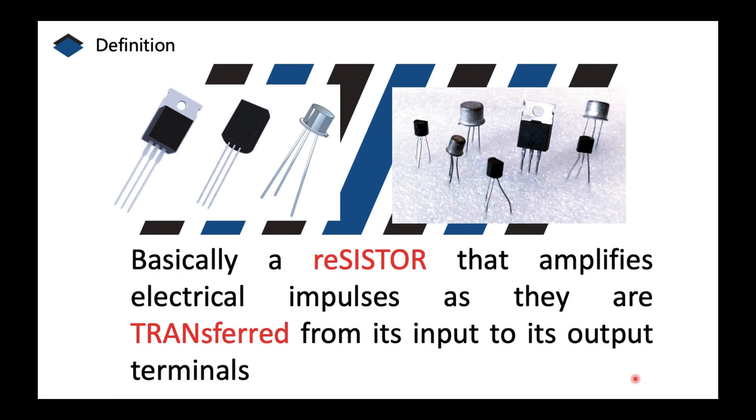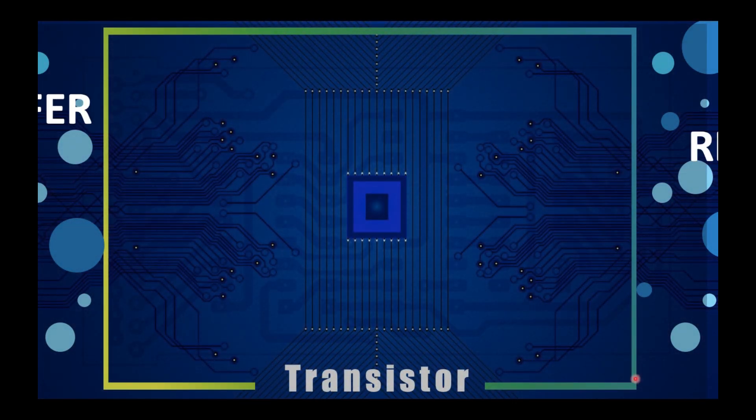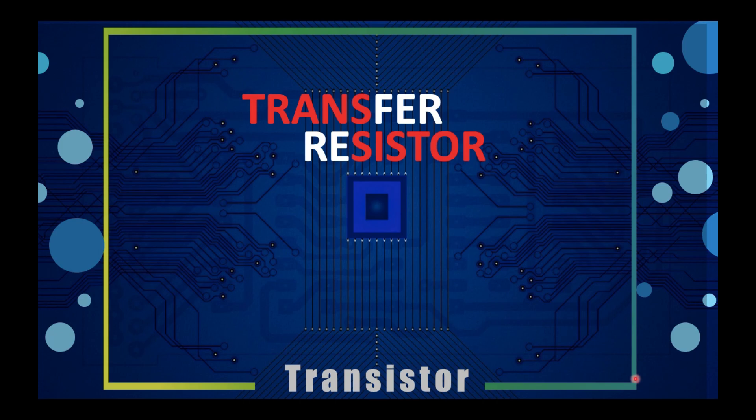Basically, it's just a resistor that has the capability to amplify electrical signals. That electrical signal is transferred from the input to its output terminals. And notice those two highlighted words: transfer and resistor. That's where the word transistor came from. If I'm going to combine those two, I'll form the word transistor.